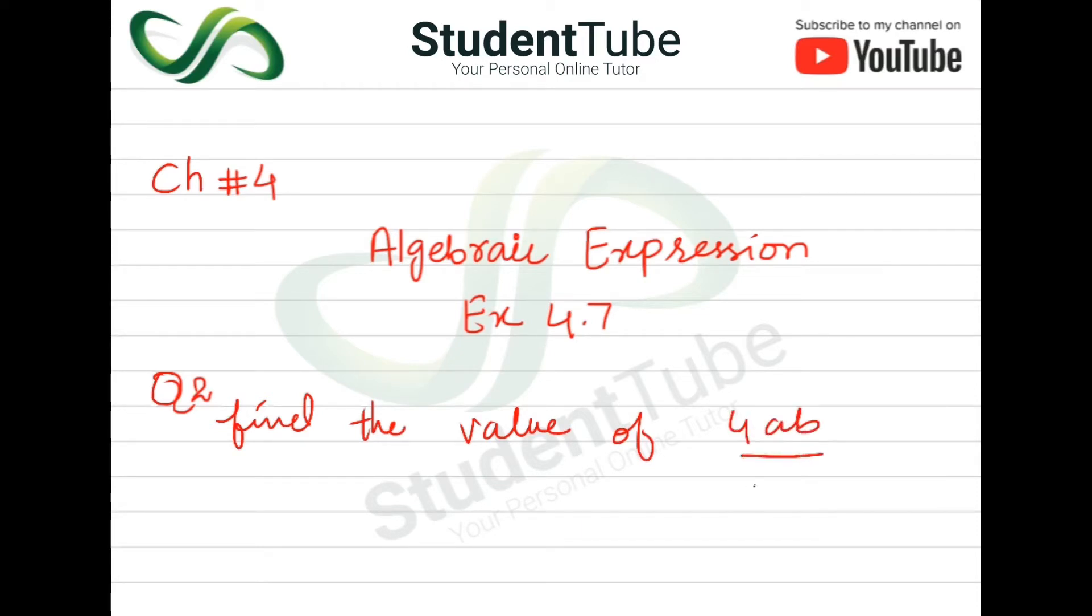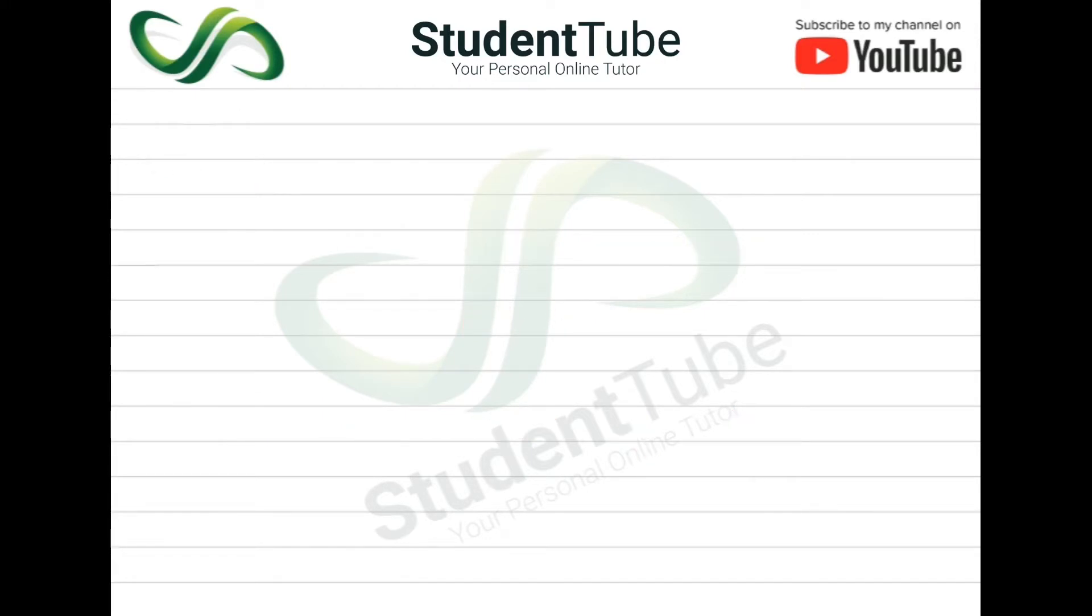We will see this question of part 1. When A plus B is equal to 9 and A minus B is equal to minus 5, now we have to know the value of 4AB.